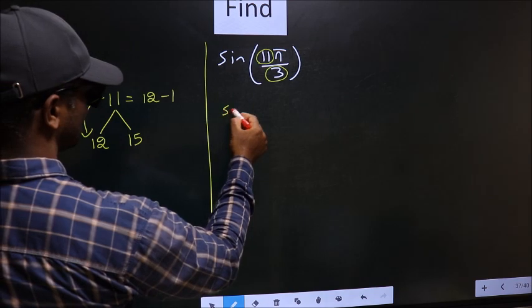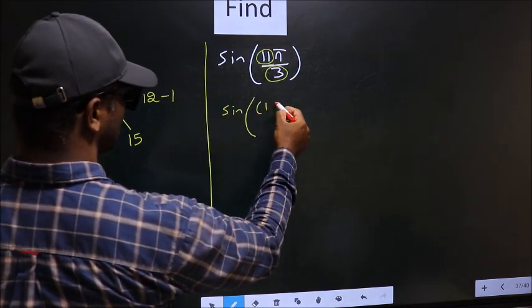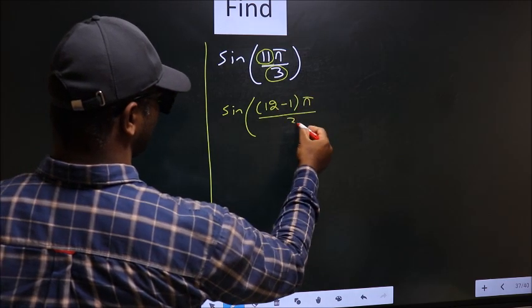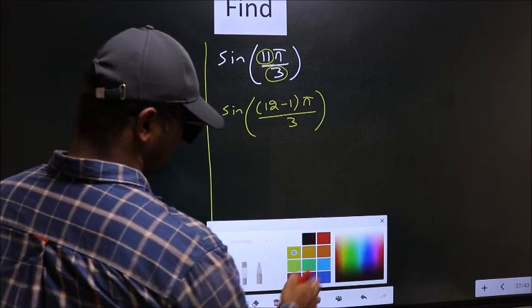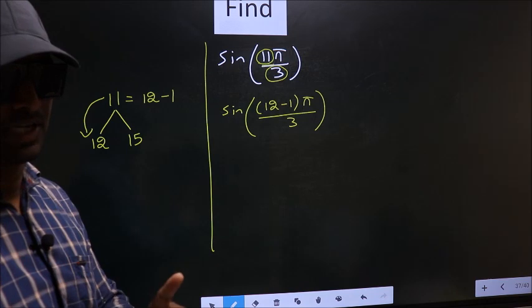So this will change to sin. In place of 11, we write 12 minus 1, π by 3. This is your step 1.